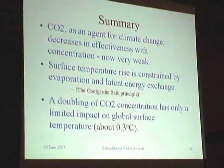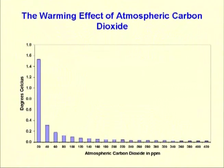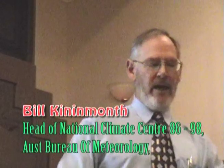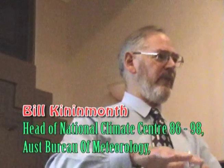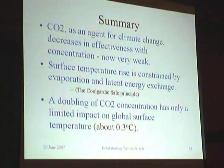CO2 is an agent for climate change, but it decreases in effectiveness as concentration increases. This point was recognised by the IPCC in its first assessment report — it had a logarithmic equation — and I haven't been able to find it in any of the subsequent reports. That's an inconvenient truth. Bill Priestley pointed out that over well-watered surfaces there is a constraint on high temperatures, and as an aside he noted that ocean temperatures will be restrained to about 30 degrees centigrade as well. I am very confident that a doubling of CO2 concentration has only a limited impact on global surface temperature, and I would be surprised if we got much more than about 0.3 of a degree.